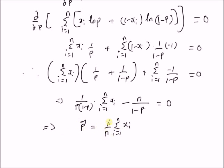That is, p-hat is given by the sample mean of the observations. So for a Bernoulli distribution, the parameter p can be estimated by using the sample mean. Thanks for watching.